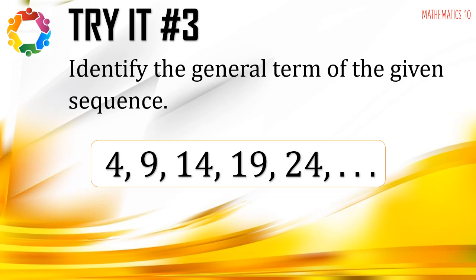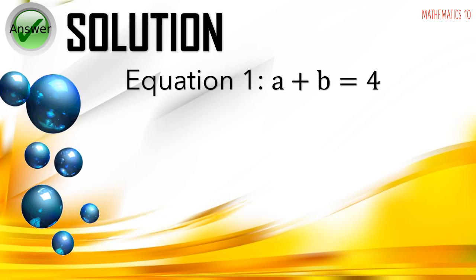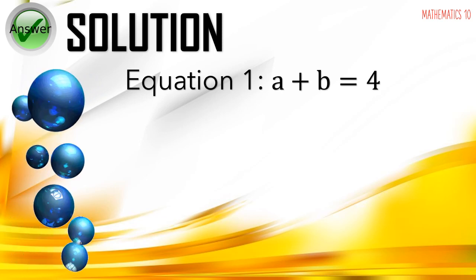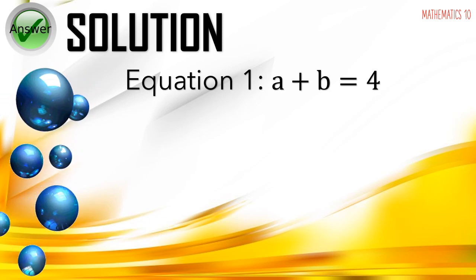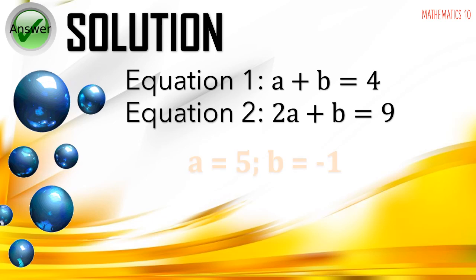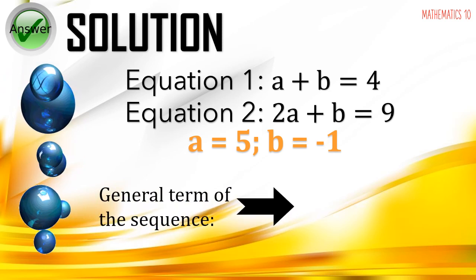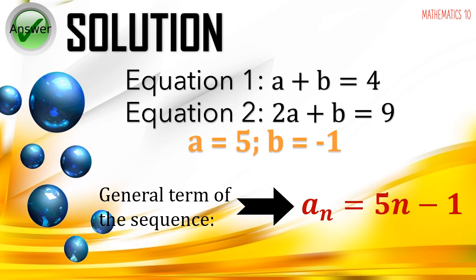Next problem: identify the general term of the sequence 4, 9, 14, 19, 24. After preparing the table and checking the common difference, equation 1 is a plus b equals 4 and equation 2 is 2a plus b equals 9. Applying the elimination method gives a equals 5 and b equals negative 1. Therefore, the general term of the sequence is a sub n equals 5n minus 1.